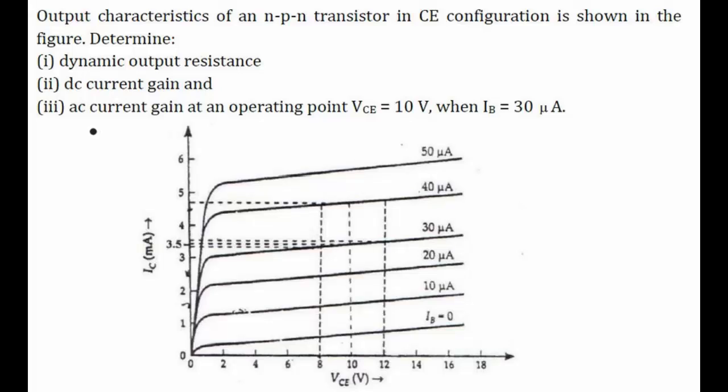Hello everyone, let's try to solve this question from the chapter semiconductor electronics. The output characteristics of an NPN transistor in CE configuration, that is collector emitter configuration, is shown in the figure.